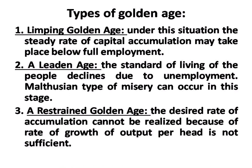There are different types of golden age. First is the limping golden age, where the steady rate of capital accumulation takes place below full employment. Associated with this is the leaden age, where people's standard of living is lower because they are not employed — a situation described as misery.